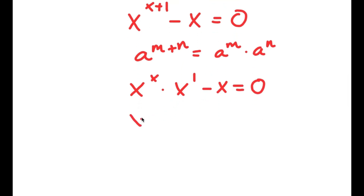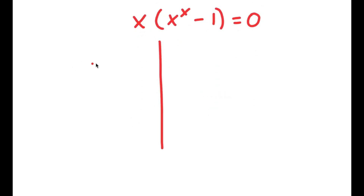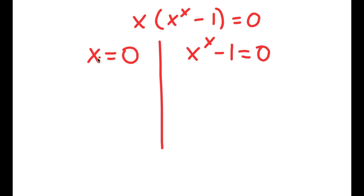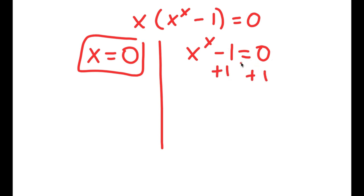If I factor out x, I get x times x to the power of x minus 1 is equal to 0. This gives me two equations: x is equal to 0, and x to the power of x minus 1 is equal to 0. x equals 0 is already a solution. For x to the power of x minus 1 equals 0, I add 1 on both sides and get x to the power of x is equal to 1. What number to the power of itself equals 1? That's going to be 1.